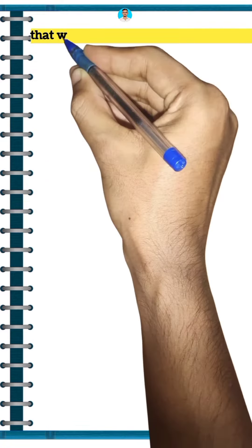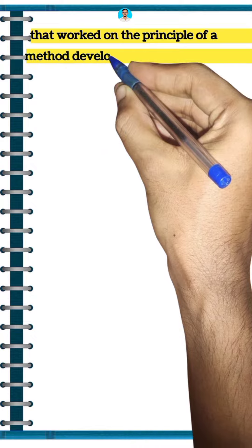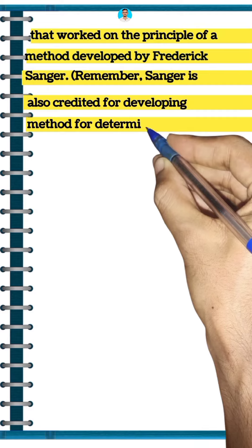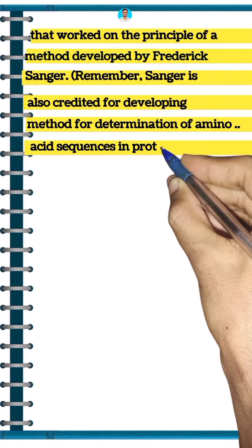Automated DNA sequencers worked on the principles of a method developed by Frederick Sanger. Remember, Sanger is also credited for developing methods for determination of amino acid sequences in proteins.